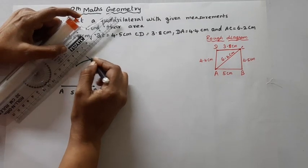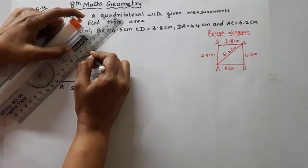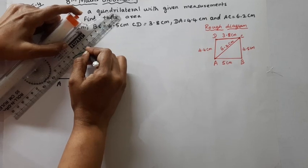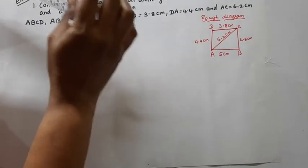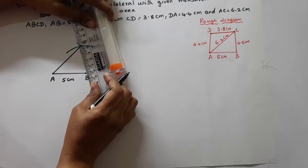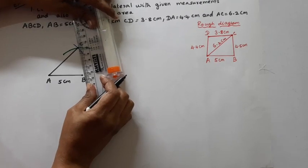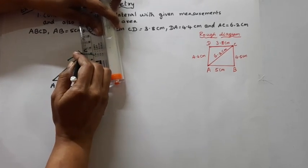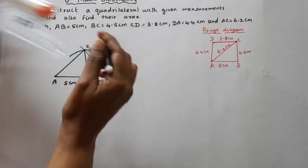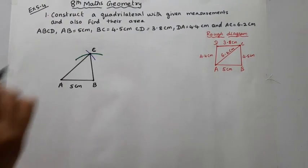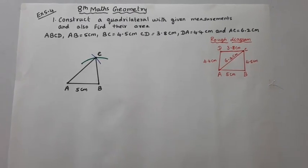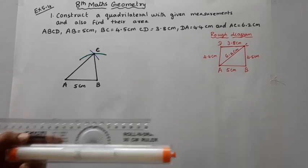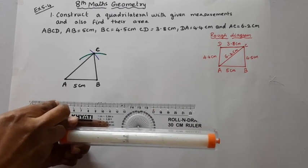Mark points A, B, C. Using dynamic mode, locate point A and point B. This gives us point C, forming triangle ABC with AB = 5 cm, BC = 4.5 cm, and diagonal AC = 6.2 cm. Now for CD = 3.8 cm.